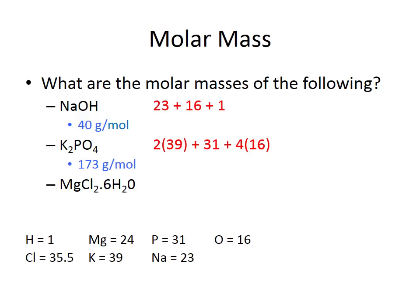The last example is magnesium chloride hexahydrate (MgCl₂·6H₂O). The 6H₂O means the magnesium chloride is hydrated, with six water molecules attached per molecule. Working through this: magnesium has a mass of 24, two chlorides each at 35.5, and six water molecules each with mass 18 (two hydrogens at 1 plus one oxygen at 16). Adding all values gives a final molar mass of 203 g/mol.